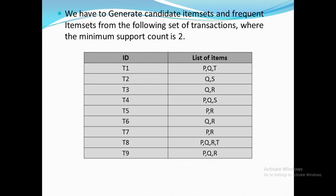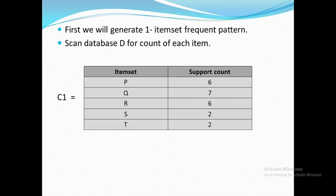Now first we will scan our dataset. Scanning means we thoroughly read our dataset and find out the individual items present in it. We can see we have 5 individual elements: P, Q, R, S, and T in our dataset. The first step is to generate a one-item-set frequent pattern. For generating a one-item-set frequent pattern, we will scan our database D, which we have done previously, and find out we have 5 individual items.